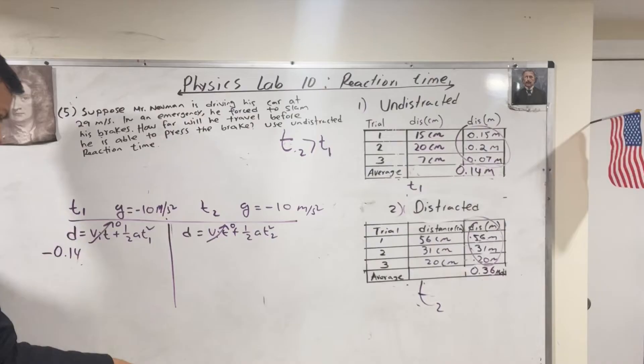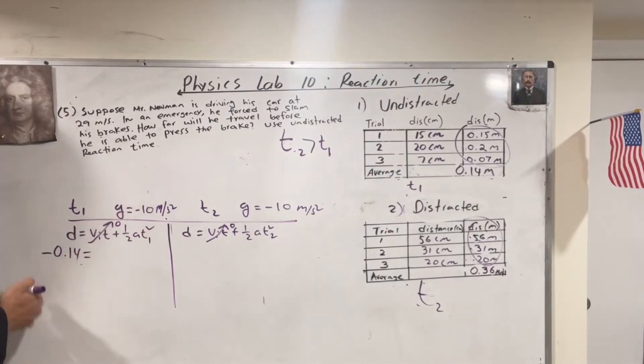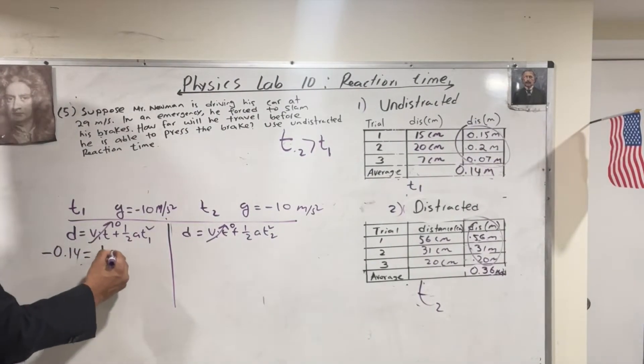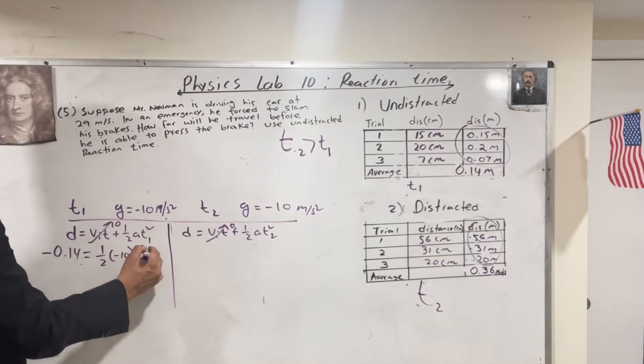South means, of course, negative. Don't forget that. Half negative 10 T squared. Here.